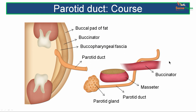A transverse section through the oral cavity shows the course of the parotid duct: leaving the parotid gland, traveling anteriorly over the masseter muscle, going deeper at the anterior border of masseter by piercing the buccal pad of fat, buccopharyngeal fascia and buccinator muscle, then having an oblique course and ultimately opening at the papilla opposite the upper second molar tooth. The oblique course of the submucosal part of the duct acts as a valve and prevents inflation of the duct during violent blowing.